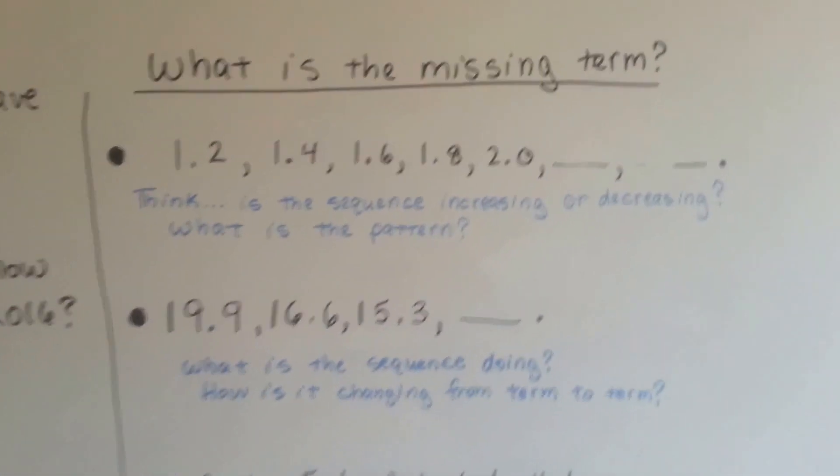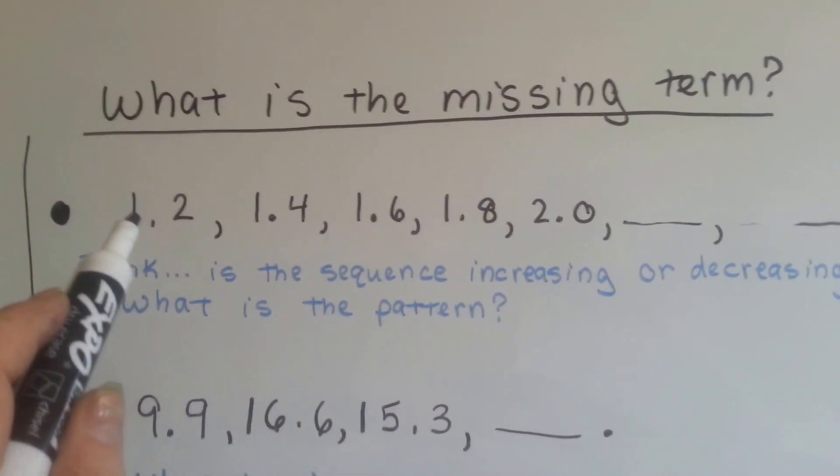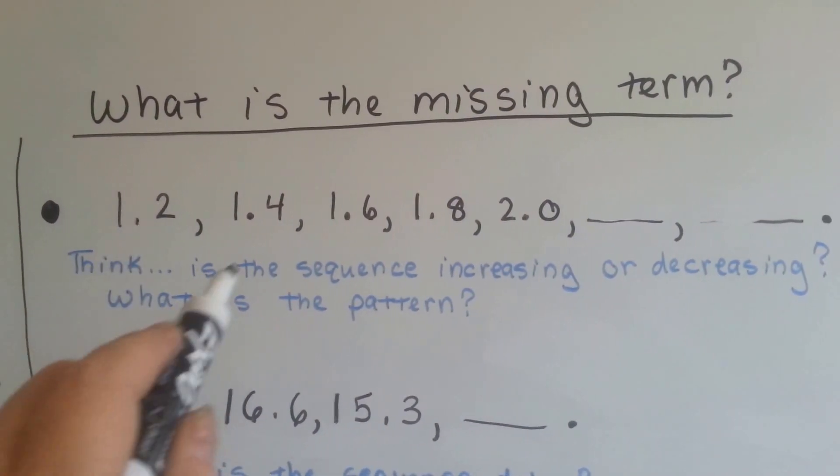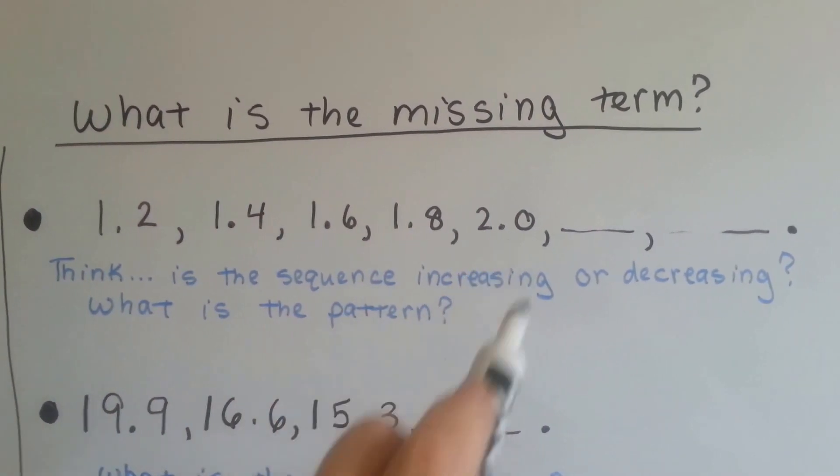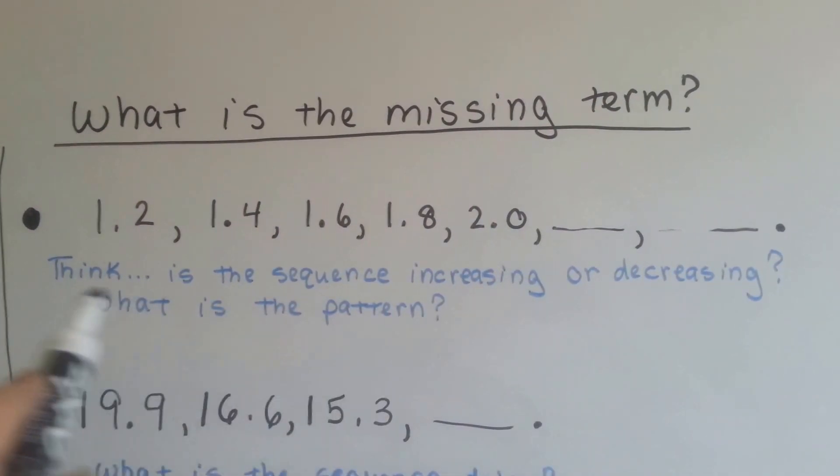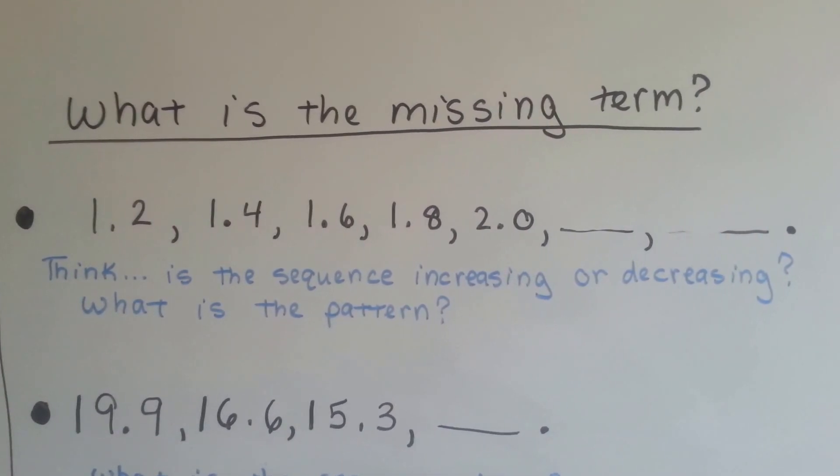We can also find a missing term by looking at a sequence. If you saw this: 1.2, 1.4, 1.6, 1.8, 2.0. Can you see what the sequence is doing? Is it increasing or decreasing? And what the pattern is?